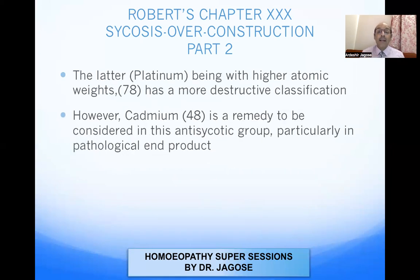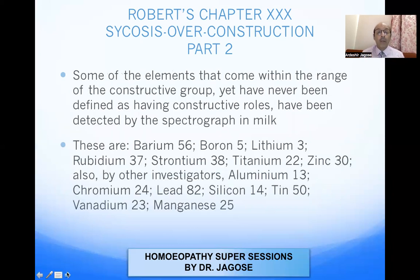Platinum, having the higher atomic weight of 78, has a more destructive classification. Cadmium, with atomic weight 48, is a remedy to be considered in the antipsychotic group, particularly in the pathological end product, where more pathological symptoms may be prominent.